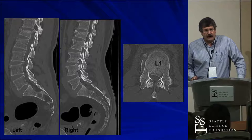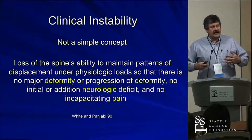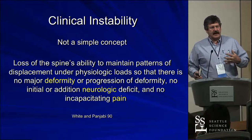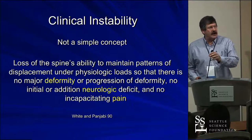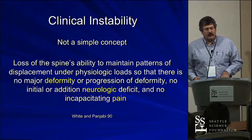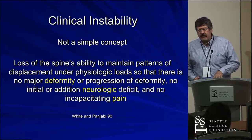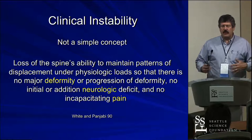The premise of all our classification in large part is whether something is stable or unstable — this is what guides our treatment. The crux of instability is the loss of the spine's ability to maintain patterns of displacement under physiological loads so that there is no major deformity or progression of deformity, no initial or additional neurological deficit, and no incapacitating pain. What we want to do when we treat thoracolumbar fractures is address the deformity, prevent it from getting worse, correct it if needed, address neurological issues, help them recover, and deal with pain.